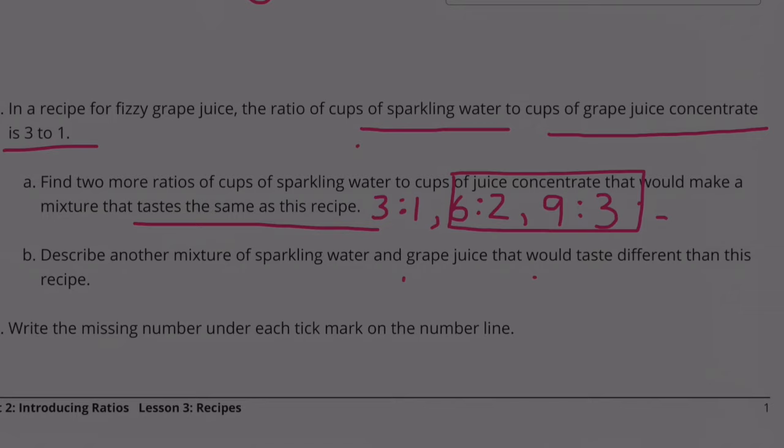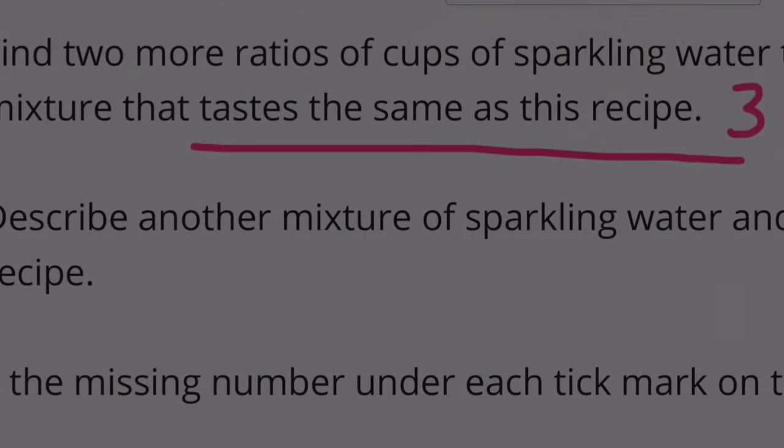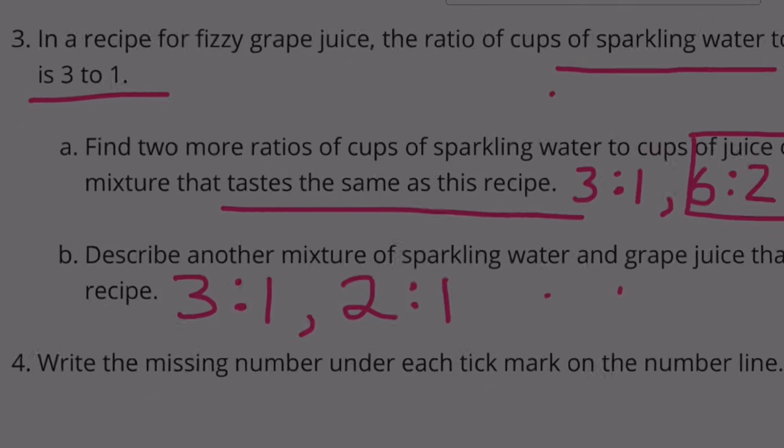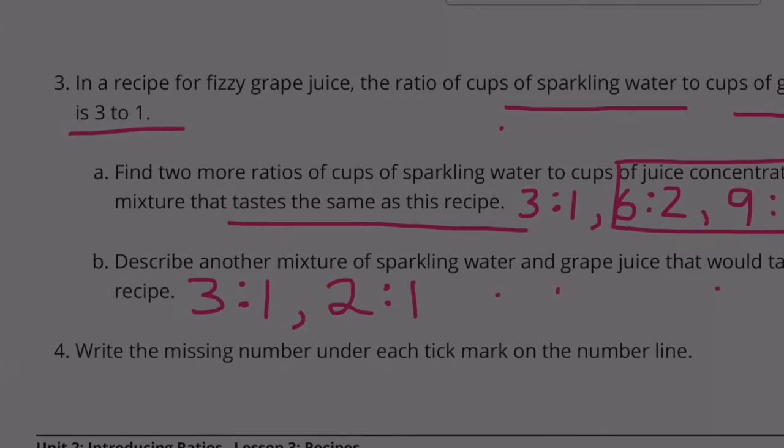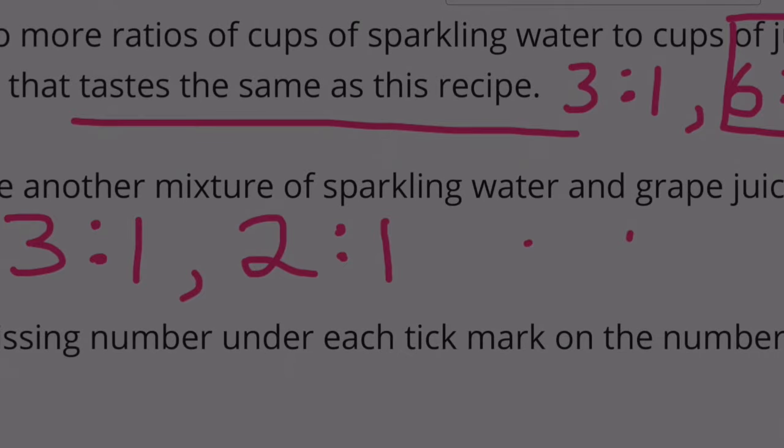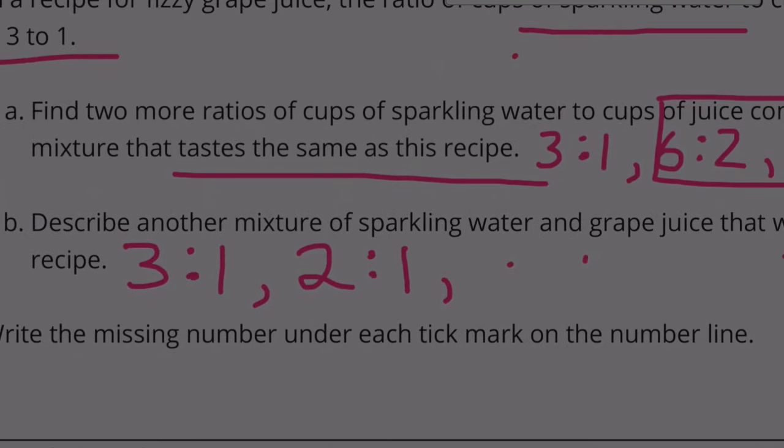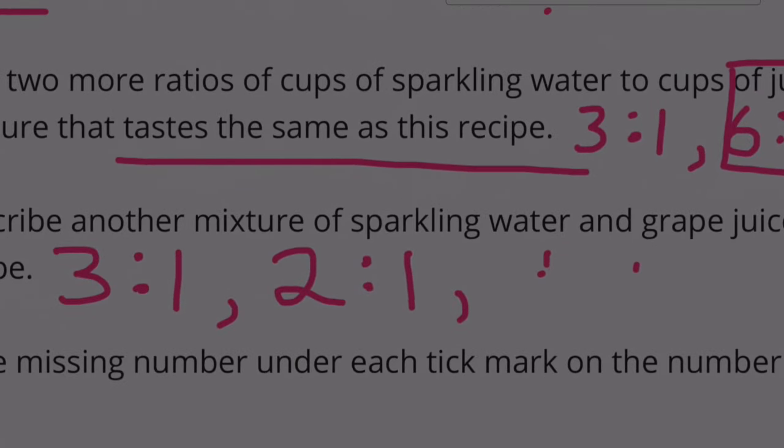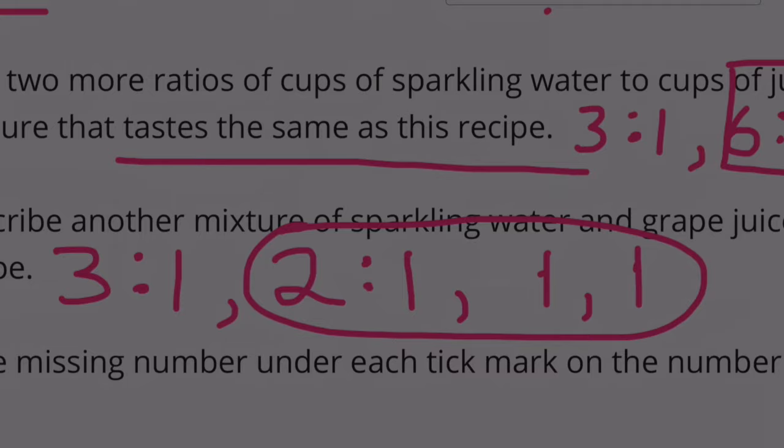Part B: Describe another mixture of sparkling water and grape juice that would taste different than this recipe. Well, remember they started out with a three to one. So we could change it up and instead of having three cups of sparkling water, we could only have two cups of sparkling water and one cup of grape juice. That would make it taste differently. And then we could have one cup of sparkling water and one cup of grape juice. So here are the two mixtures that would taste different.